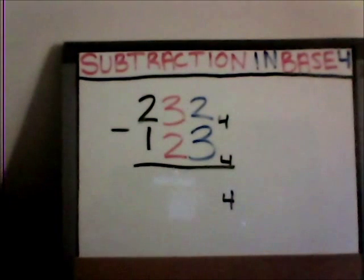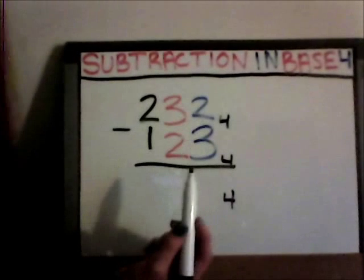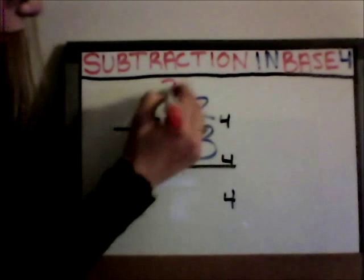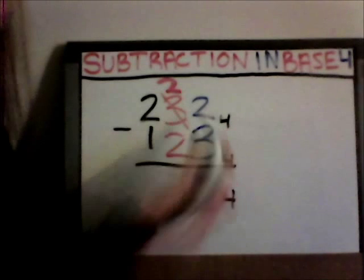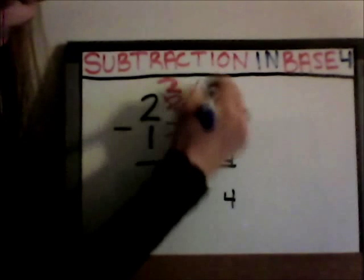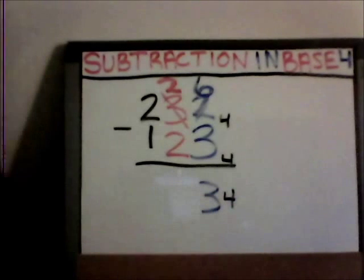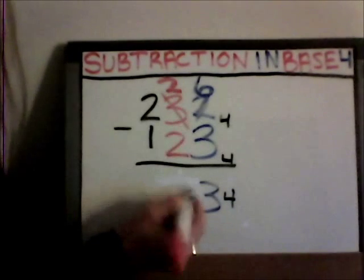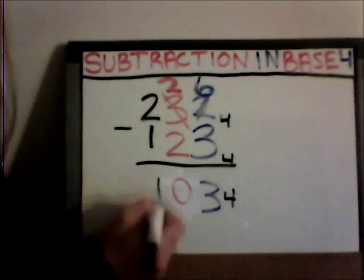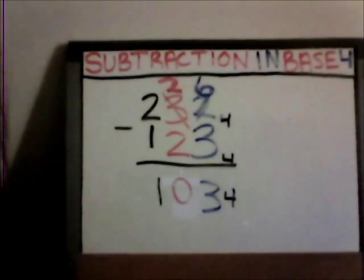Now to try a harder number. You can't subtract three from two without getting a negative number. So you cross off the next number and replace it. Since it's base four, you add four, and you get six. Six minus three is three. Two minus two is zero. And two minus one is one. So two-hundred-thirty-two base four minus one-hundred-twenty-three base four equals one-hundred-three base four.